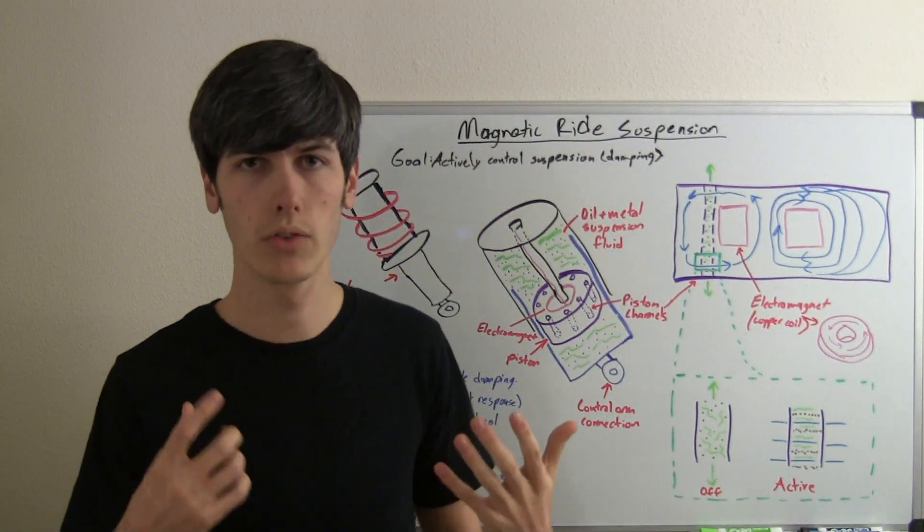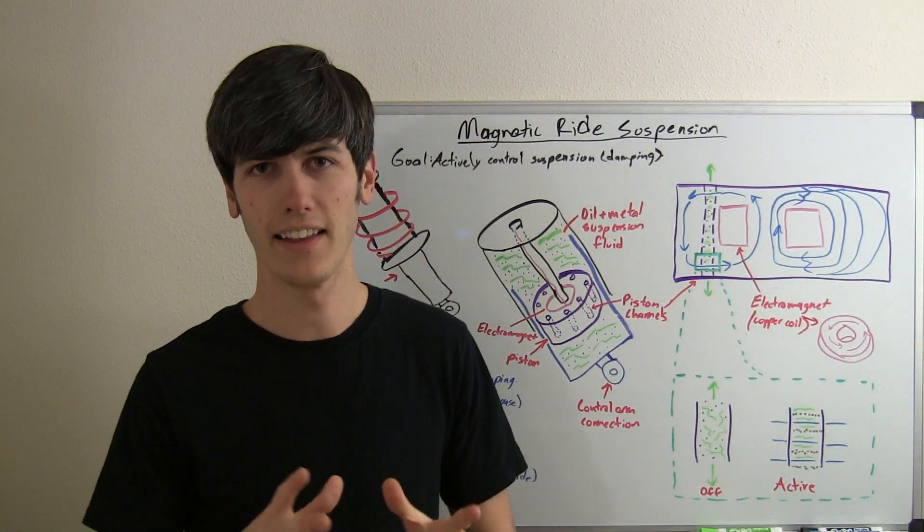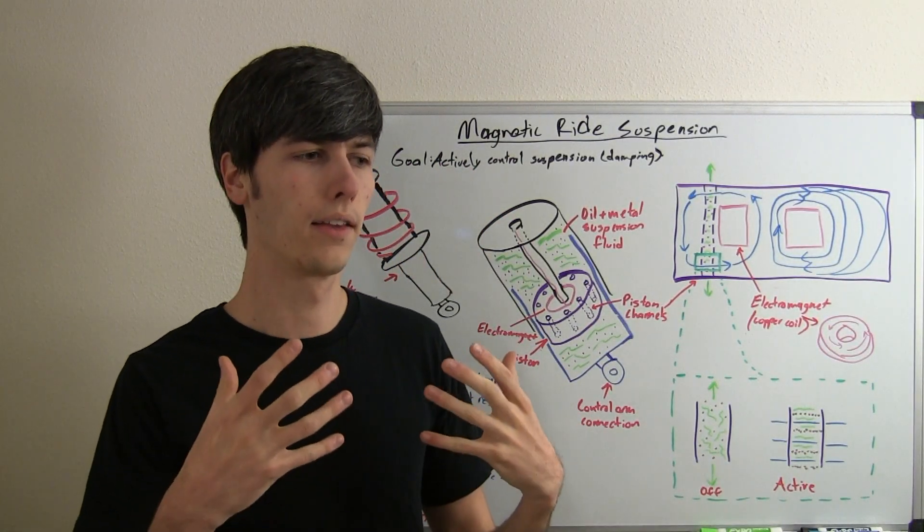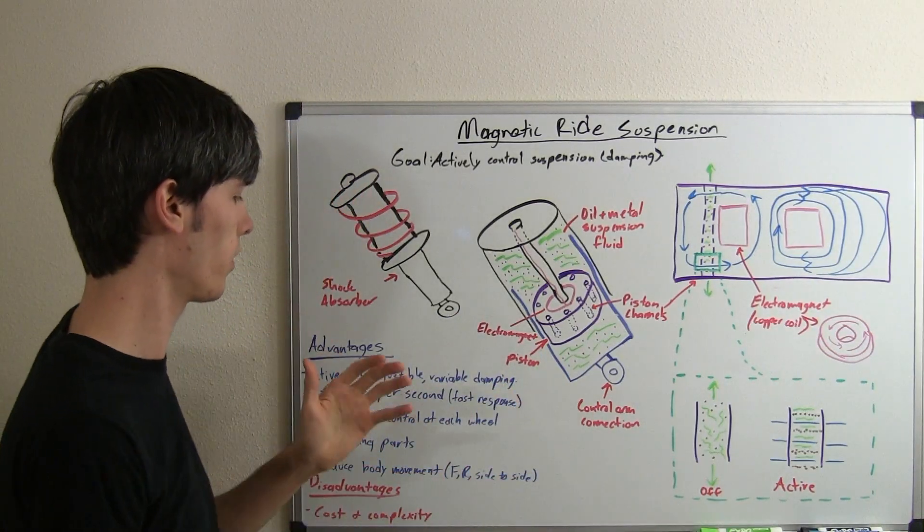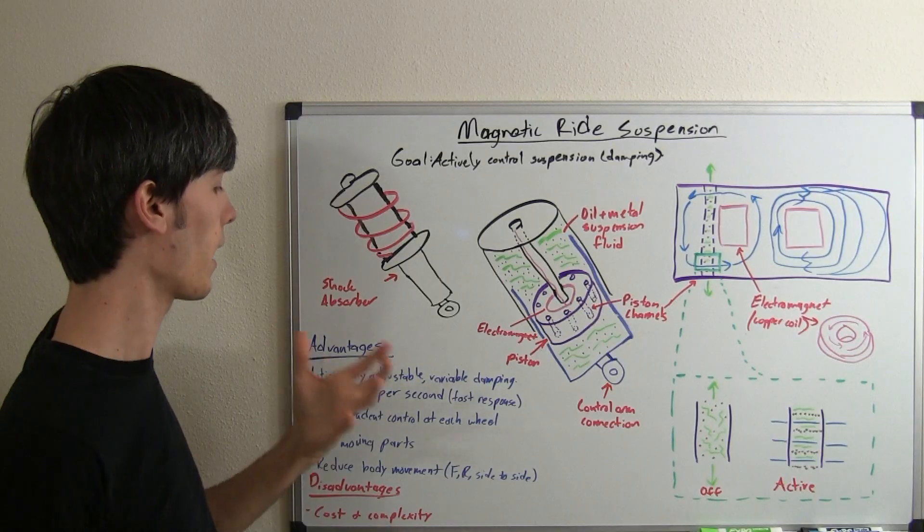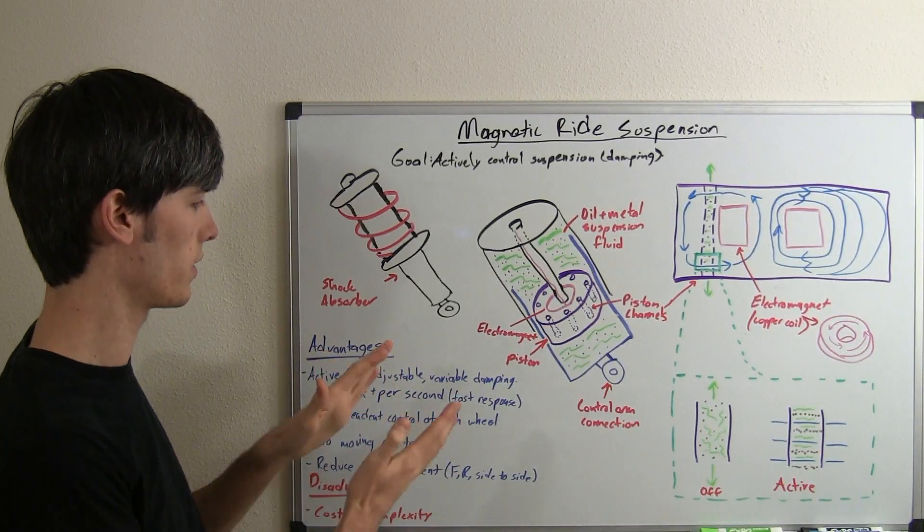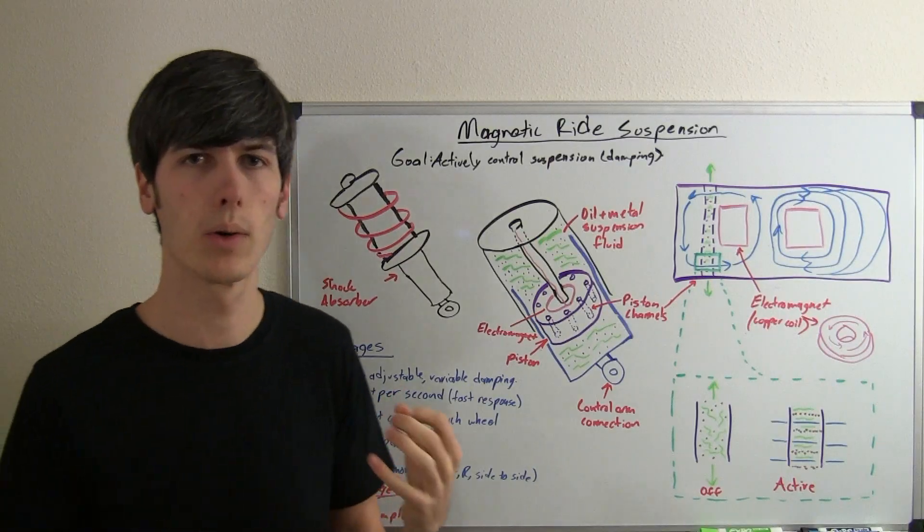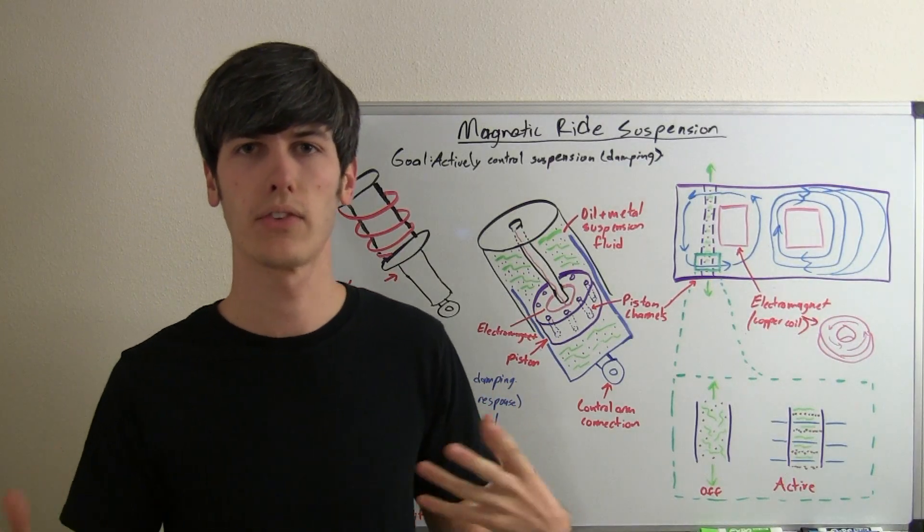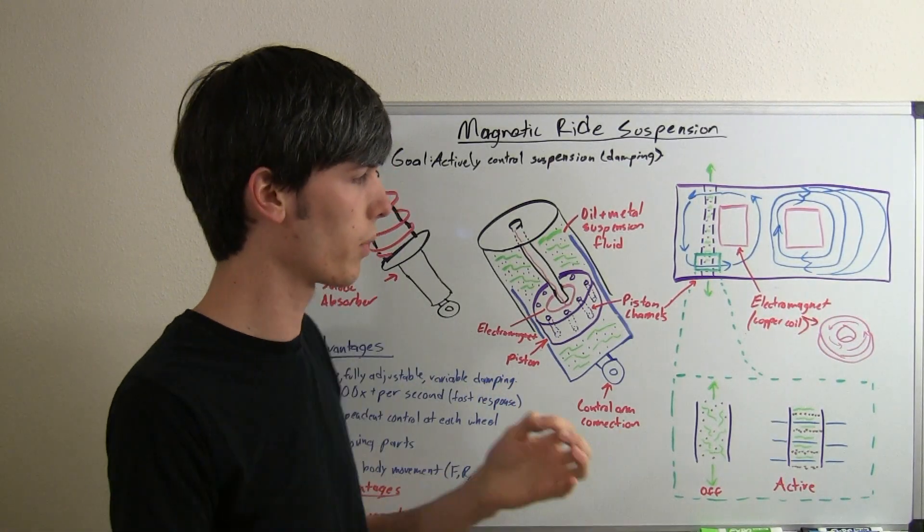Now, with traditional coilovers, you've just got one setting and it's set and that's it. There are variable ones out there but the other advantage of this is this can activate, change the damping ratio over 100 times per second. So, it's very quick to change based on different sensors that are on the vehicle and understand what's going on.